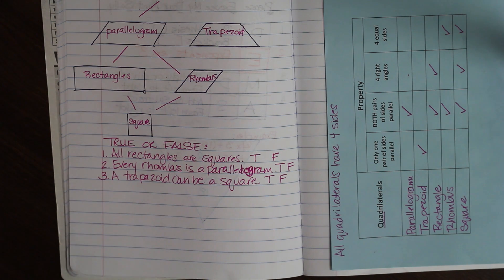Number two, every rhombus is a parallelogram. Is that true or false? And number three, a trapezoid can be a square. True or false? Be prepared to answer these questions when you come to class tomorrow. Thank you.